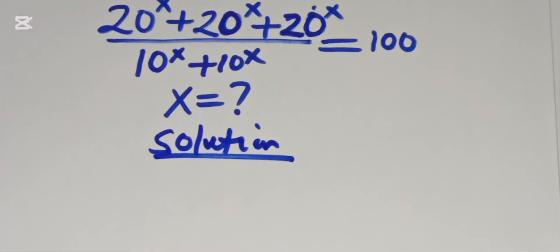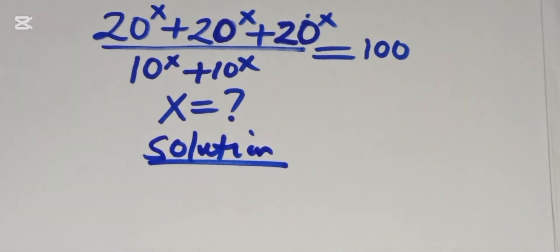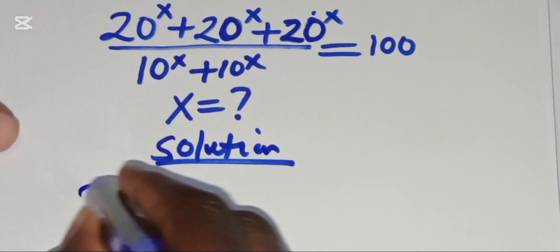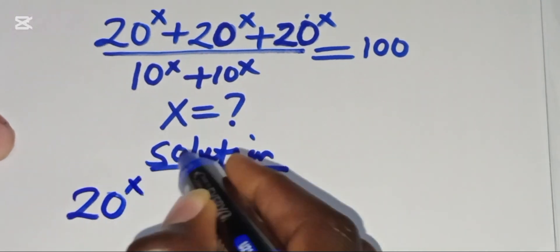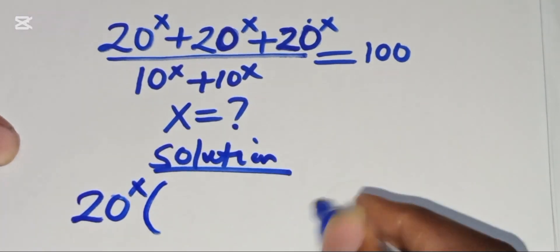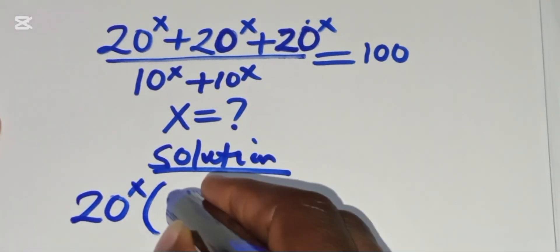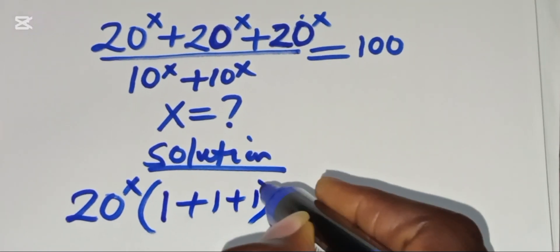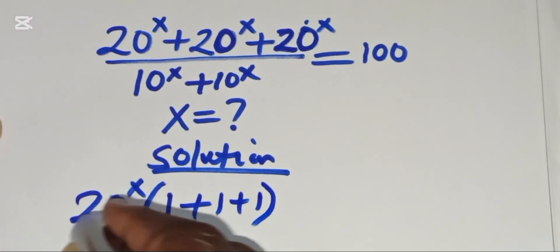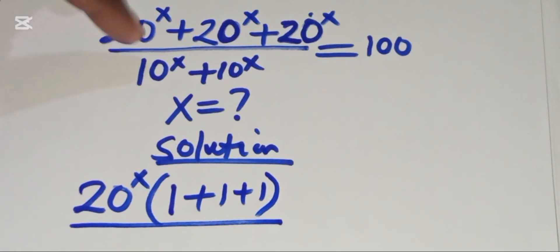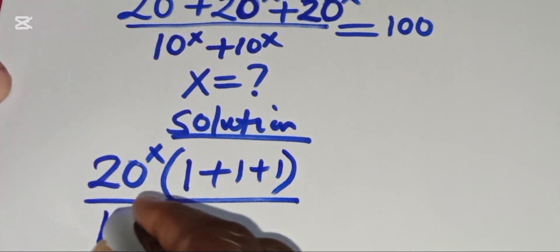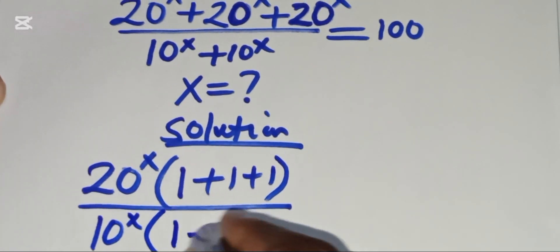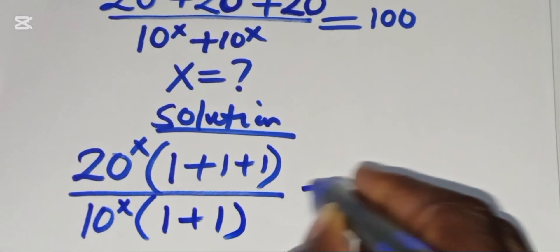From here, in the numerator we have 20^x + 20^x + 20^x. Since 20^x is common, we factor it out, giving 20^x times (1 + 1 + 1). In the denominator, 10^x is common, so we factor to get 10^x times (1 + 1).